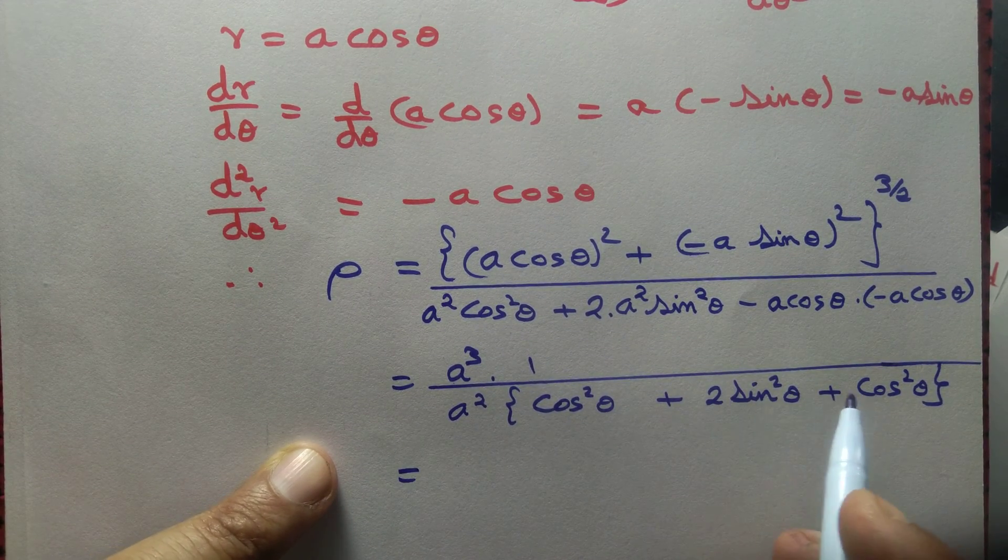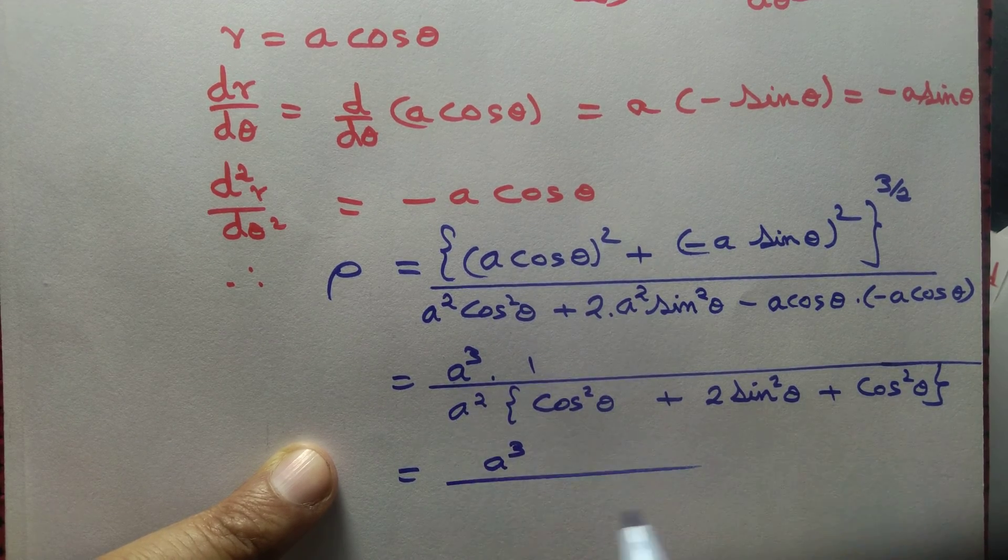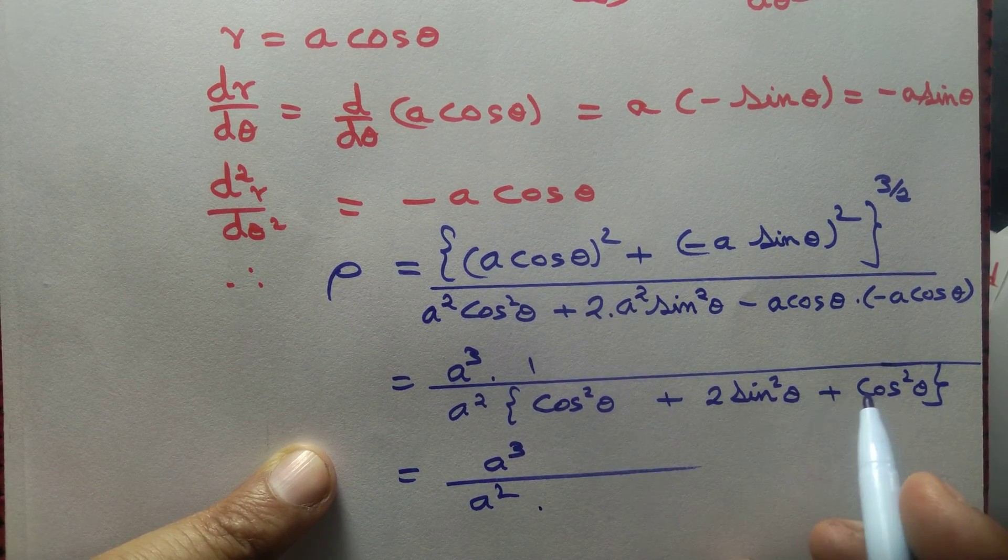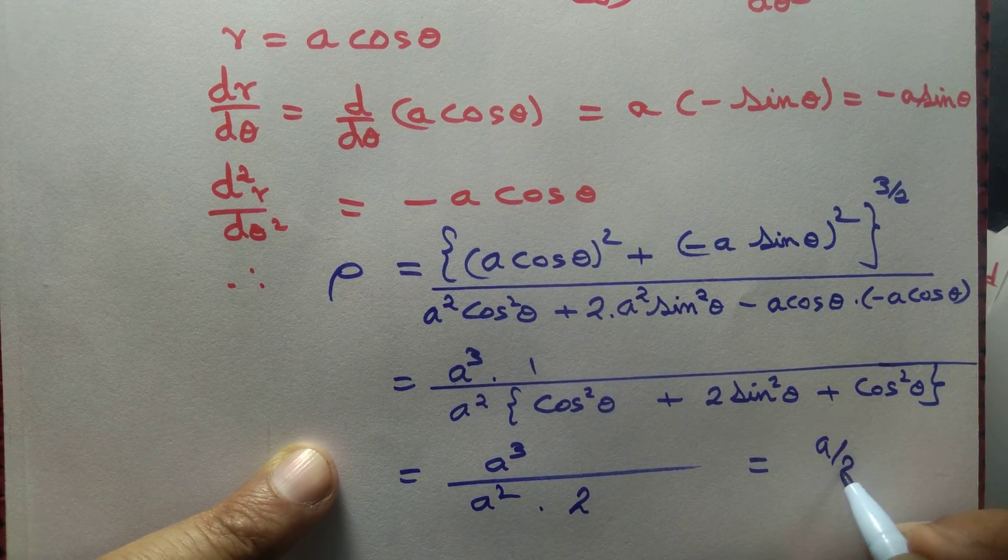Again, sin² plus cos² is 1, and 1 plus 1 is 2. So this is just 2, and this equals a by 2.